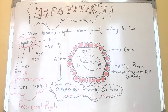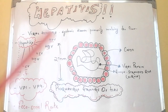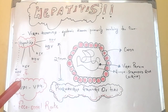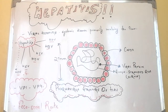Here we can see it is approximately 27 nanometers and it is a non-enveloped RNA virus — not DNA. This is an RNA virus belonging to the picornavirus genus or family. HAV is stable to treatment with 20 percent ether acid.